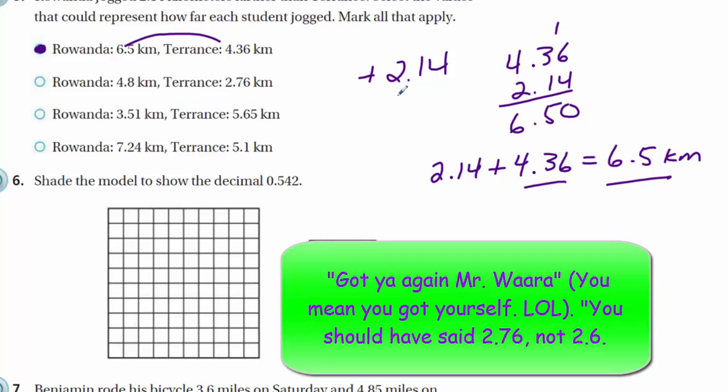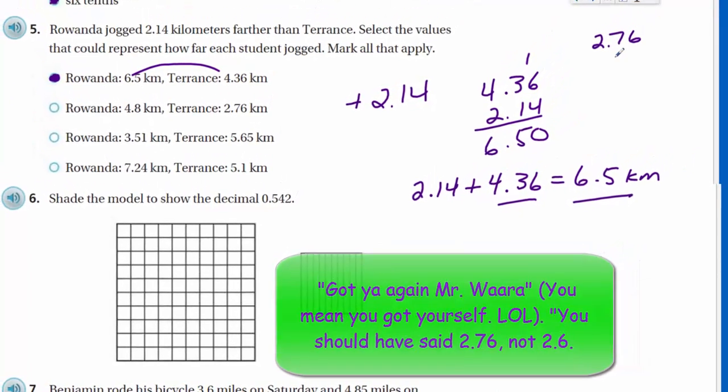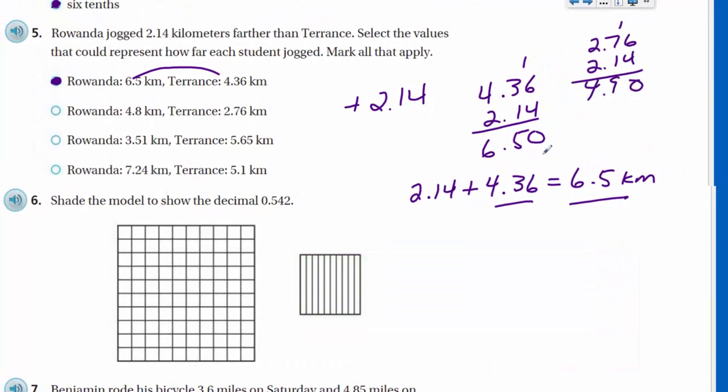Here we have 4.8 and then Terence, 2.6. I guess that's still a possibility. Let's take 2.76, 2.14. We have 4.90. Not quite. Close, but not quite. Here, this one here, we don't have to do any math because we can look at the reasonableness by looking at it. Terence did not jog farther than Rwanda. So this can't be. We are all talking about the same unit. So it can't be that one. Here, good possibility. Let me see. If we just added 2... Yeah, it looks pretty close. So it's just these two answers here.